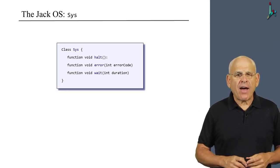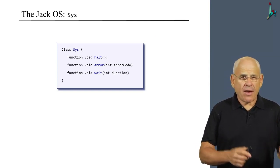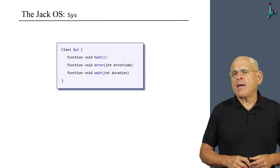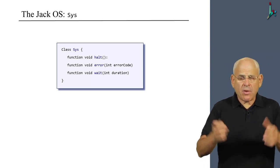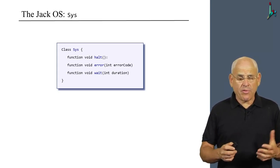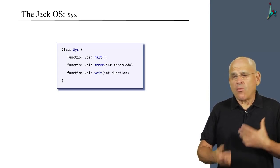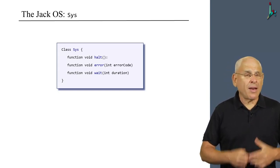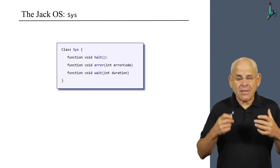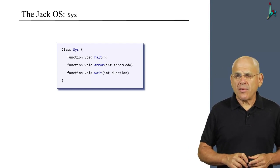The sys class provides a set of three utilities: halt, error, and wait. The wait function is quite useful. For example, if you create an animation that runs within some loop and you think that the animation is too fast, you can slow it down or add some delay factor by putting the wait command into this loop.